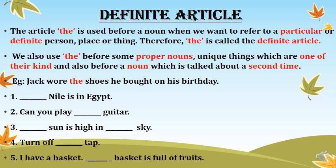Now let's do some exercise. 'Dash Nile is in Egypt.' Nile is the name of a river, so we are talking about a particular river. Therefore we will use 'the' before Nile. The answer is: 'The Nile is in Egypt.'